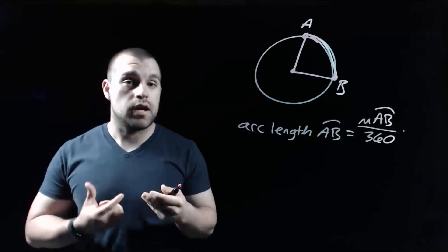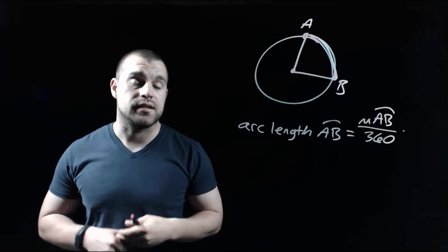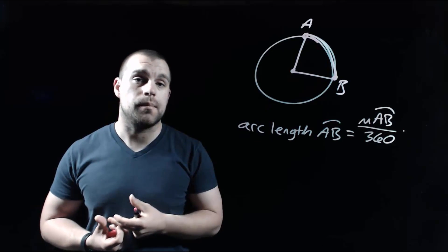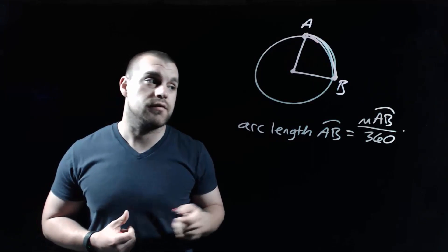So we're going to take the measure of the arc in degrees, divided by 360, because 360 is a full circle, but then we have to multiply that decimal that we end up getting by the circumference of the circle.